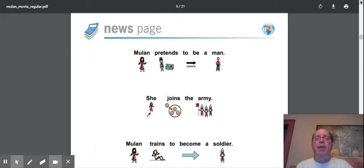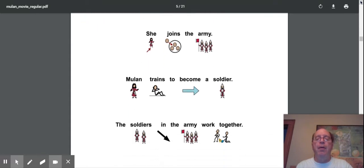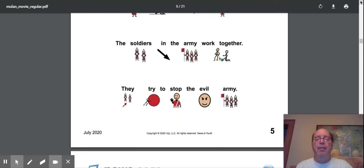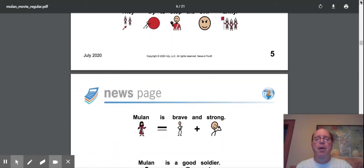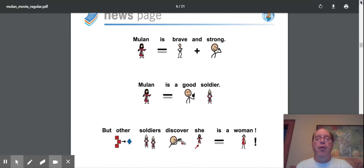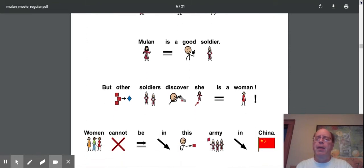Mulan pretends to be a man. She joins the army. Mulan trains to be a soldier. The soldiers in the army work together. They try to stop the evil army. Mulan is brave and strong. Mulan is a good soldier. But the other soldiers discover she is a woman. What are they going to do? Women cannot be in this army in China. I wonder if they're going to kick her out.